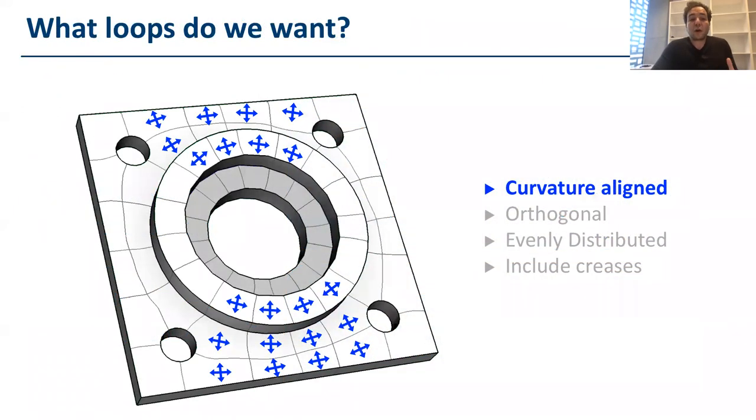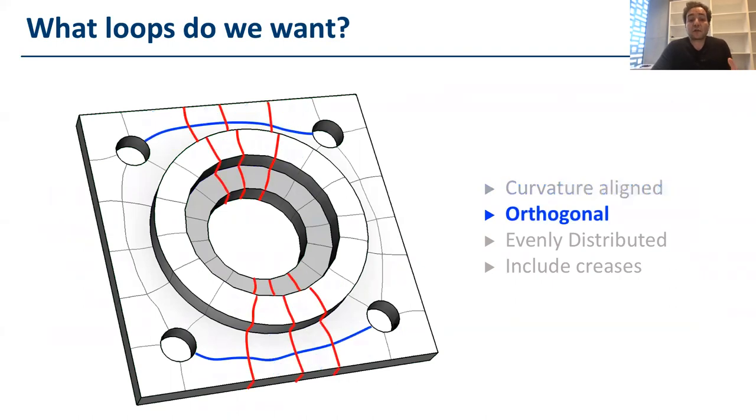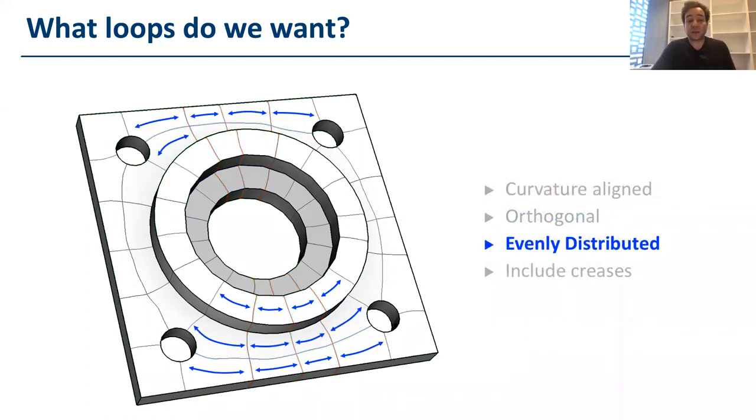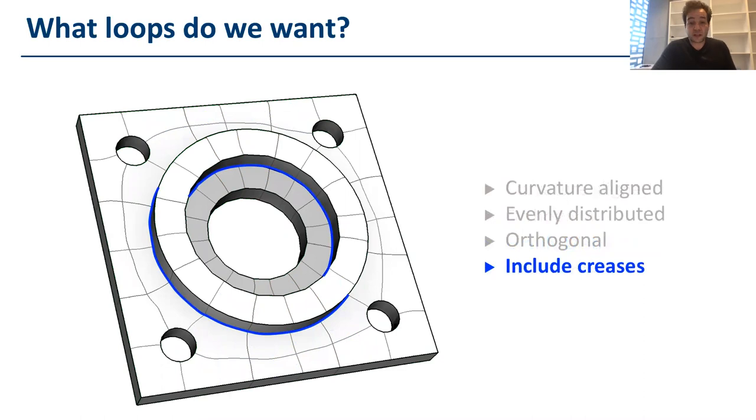What we want from our loops, from our initial set of loops that we use to cut? First of all, we want our loops to be curvature aligned. We want our loops to cross each other, yes, but only orthogonally. We want our loops to be evenly distributed on the surface along both curvature directions, and also we want our loops to include creases as well.